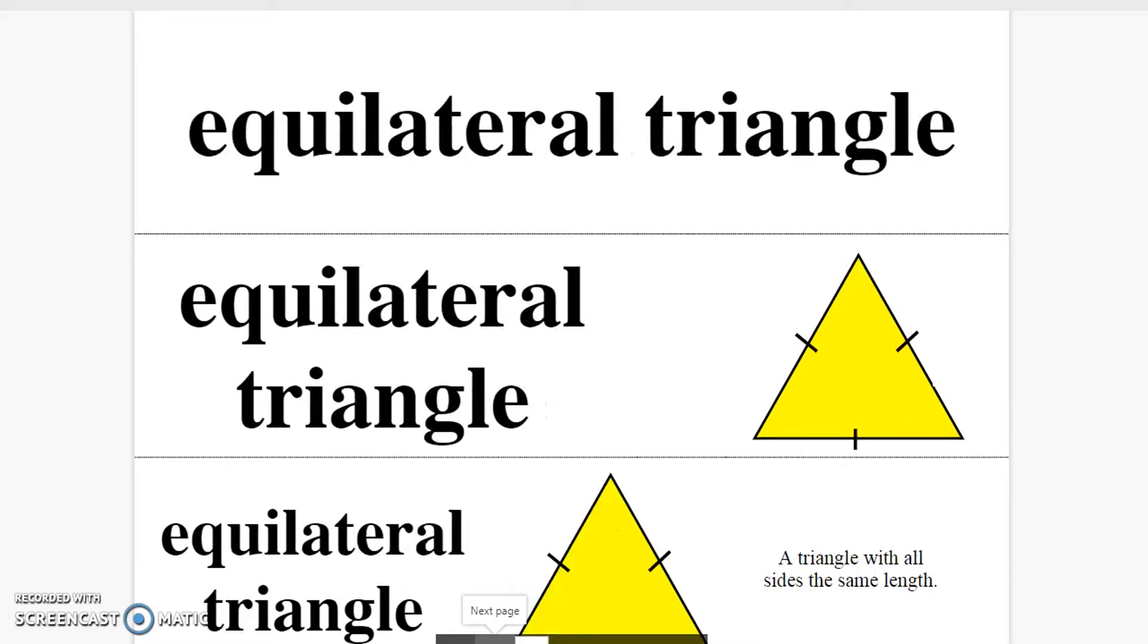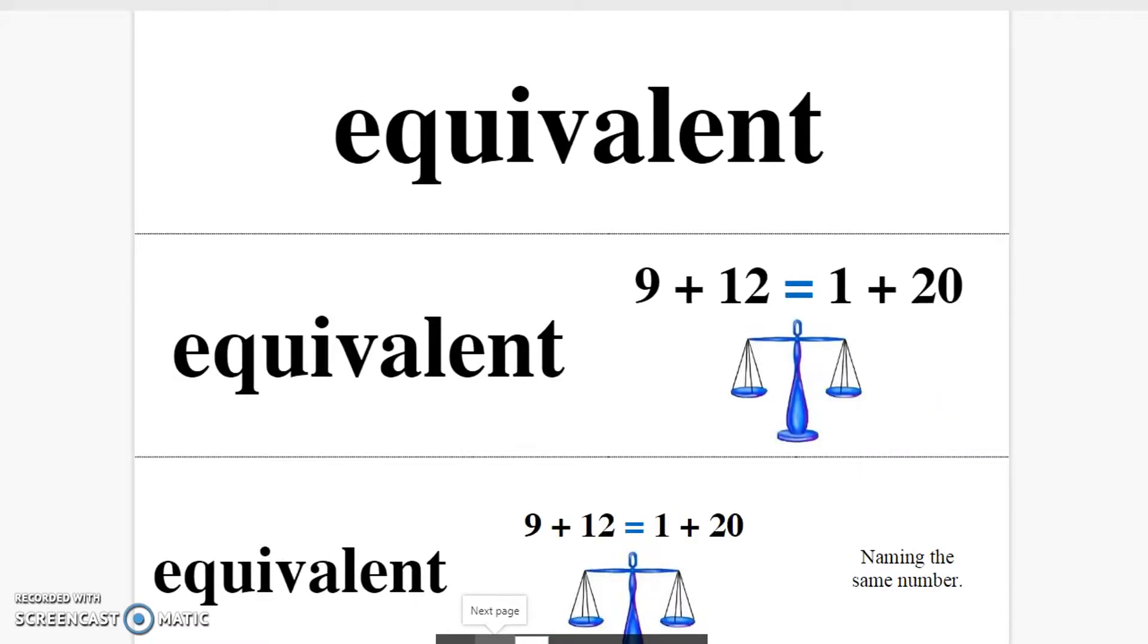Equilateral triangle. A triangle with sides the same length. Equivalent. The same number.